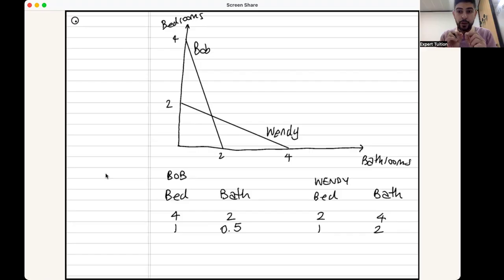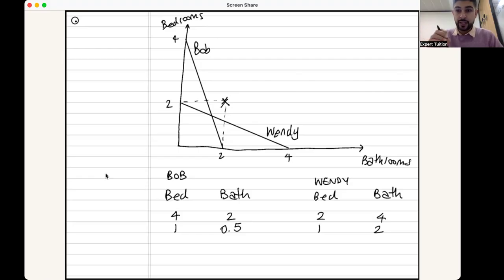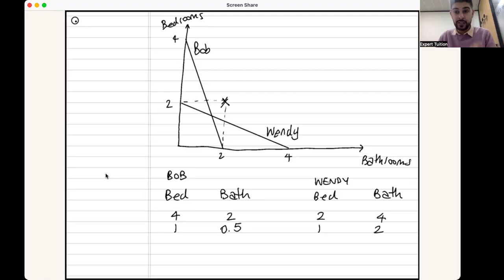After that trade, both end up with two bedrooms and two bathrooms. Plotting that point — two, two — notice that it lies outside both of their individual PPFs. Neither Bob nor Wendy could have achieved this outcome by themselves. This is why the theory is so powerful: if you specialize in what you have a comparative advantage in and then trade, it results in outcome levels that you were incapable of achieving by yourself.